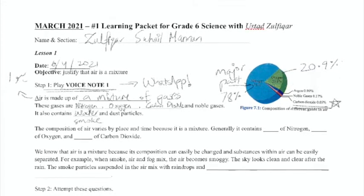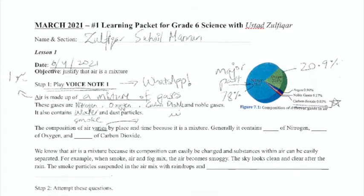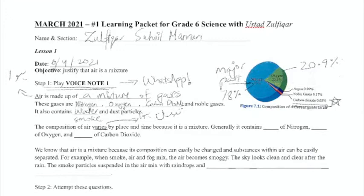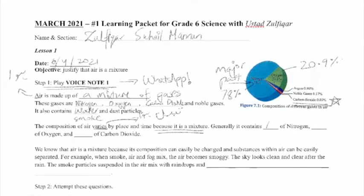The composition of air varies by place and time. Vary means it has to be changed. Place and time change. Why? Because it is a mixture.